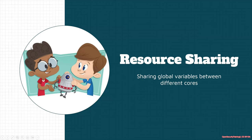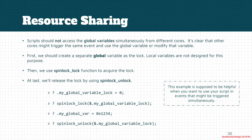Let's look at another important part of the HyperDBG script engine: resource sharing. As you can see in the previous slides, we have local variables and global variables. Global variables are those that start with a dot prefix. The issue is how we can share them between different cores, because this is a classic operating system problem — you cannot access a variable simultaneously from two cores and be guaranteed a correct answer.